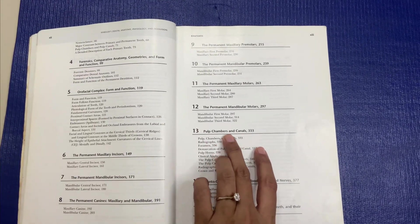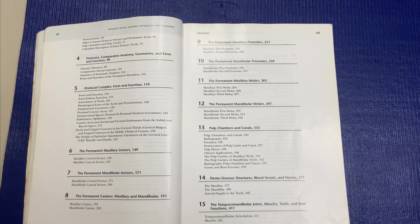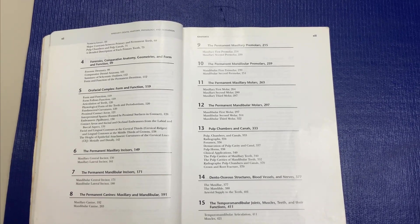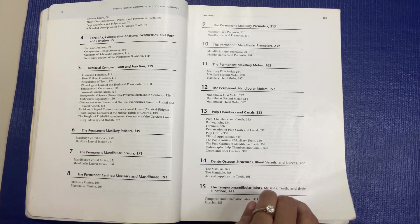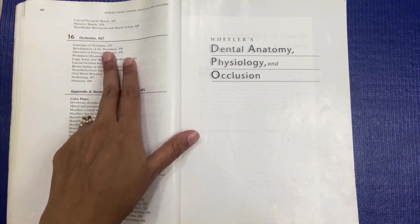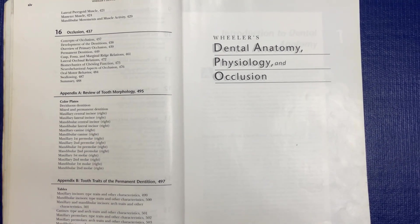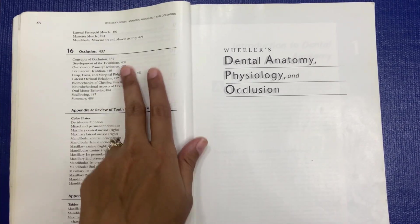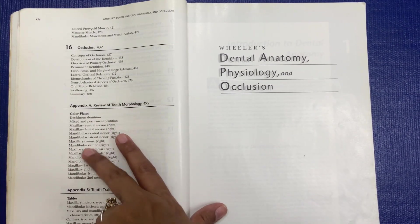Then about pulp chambers and canals, then dento-osseous structures, blood vessels and nerves, TMJ, occlusion. Extremely important chapter, occlusion is also given very nicely in this book.